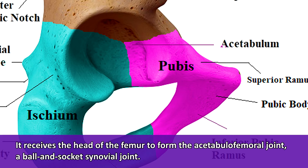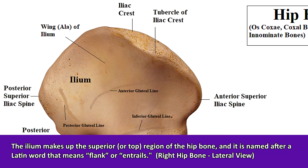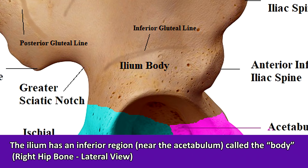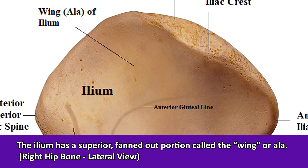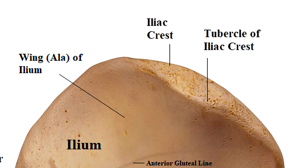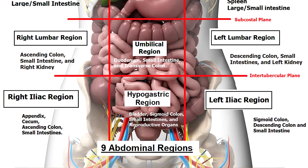Now let's talk about each major region of the hip bone starting with the ilium. The ilium makes up the superior or top region of the hip bone, and it is named after a Latin word that means flank or entrails. The ilium can be subdivided into two main portions: an inferior or lower region near the acetabulum called the body, and a superior portion which is fanned out called the wing or the ala of the ilium. If you feel the sides of your abdomen, you'll probably feel the top of that wing-like portion called the iliac crest, which allows for the attachment of various muscles.